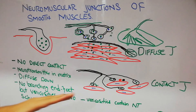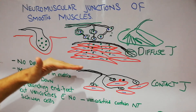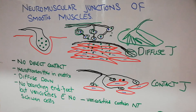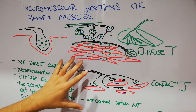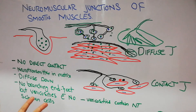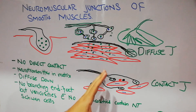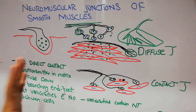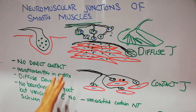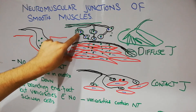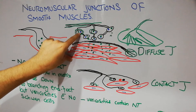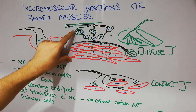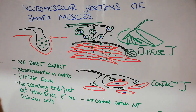In contact junctions, the distance between the muscle fiber membrane and nerve terminal is very small, so activation is quicker. The action of the neurotransmitter depends on the receptor type: activation receptors cause contraction, inhibitory receptors stop it. Acetylcholine and norepinephrine can each act as either excitatory or inhibitory transmitters. In a single fiber, acetylcholine may act as excitatory while norepinephrine acts as inhibitory, or vice versa.